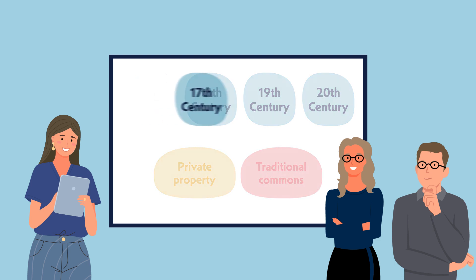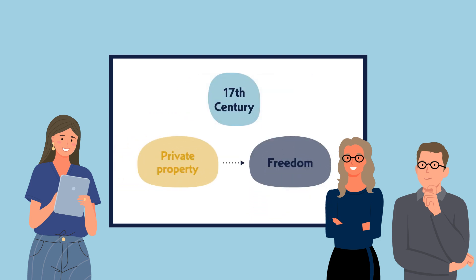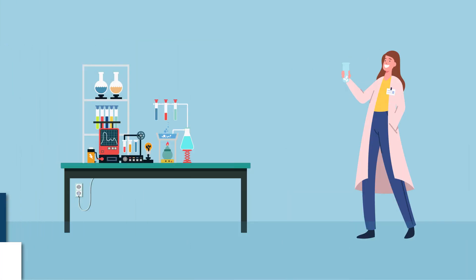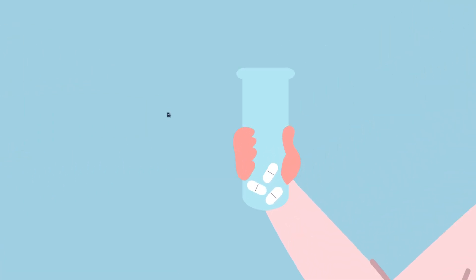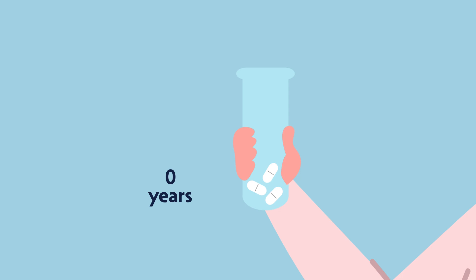For instance, since the 17th century, private property served as the route to freedom, enabling individuals to own the objects of their labor. This gradually paved the way towards the modern capitalist emphasis on private property as a means to promote the economic prosperity of society. Even societies where private property regimes are predominant encompass some common property regimes, such as those related to patents, which are only granted for a period of time, after which innovations are commonly accessible.